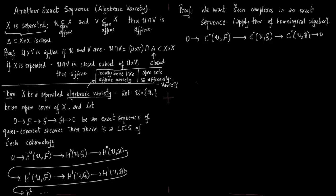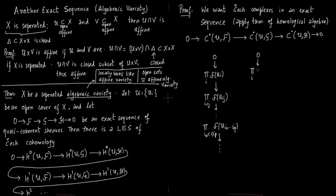Let us recall how the complex on X looks like if you have sheaf F. You form products over multi-indices I₀ < I₁ < … < Iₚ, taking sections of F. Similarly you have the same construction for G and for H.